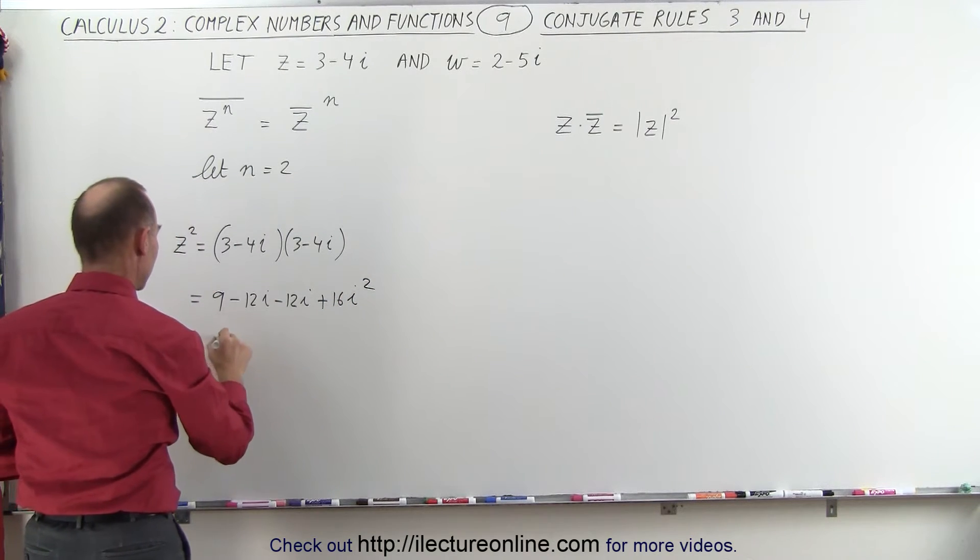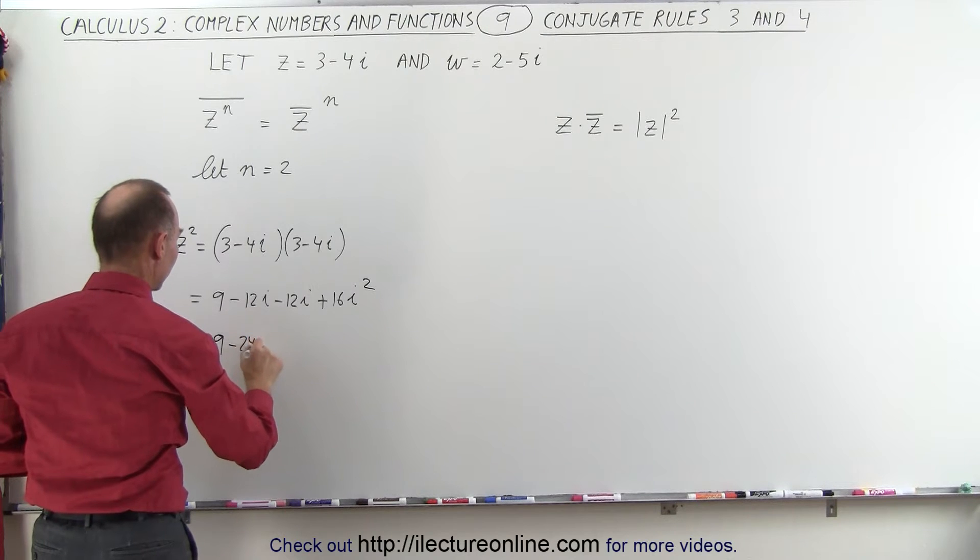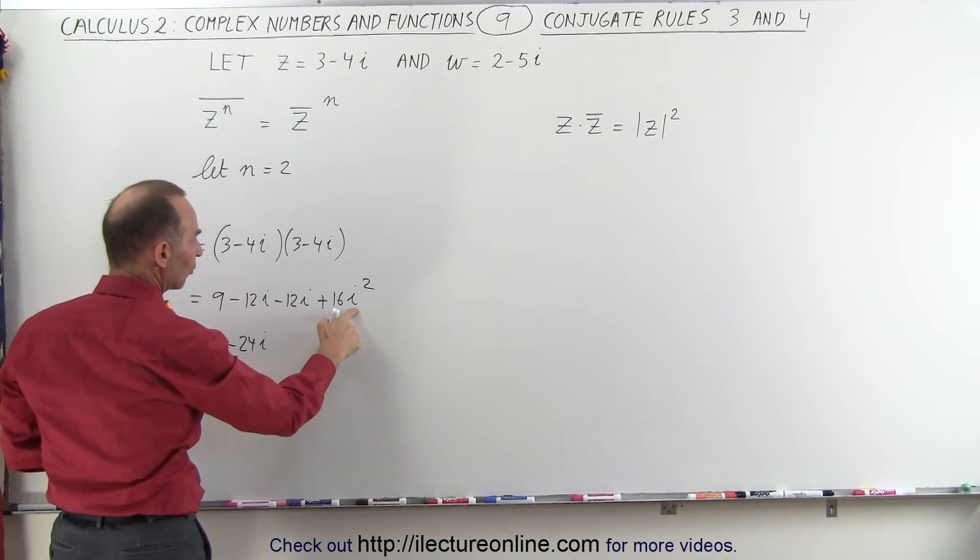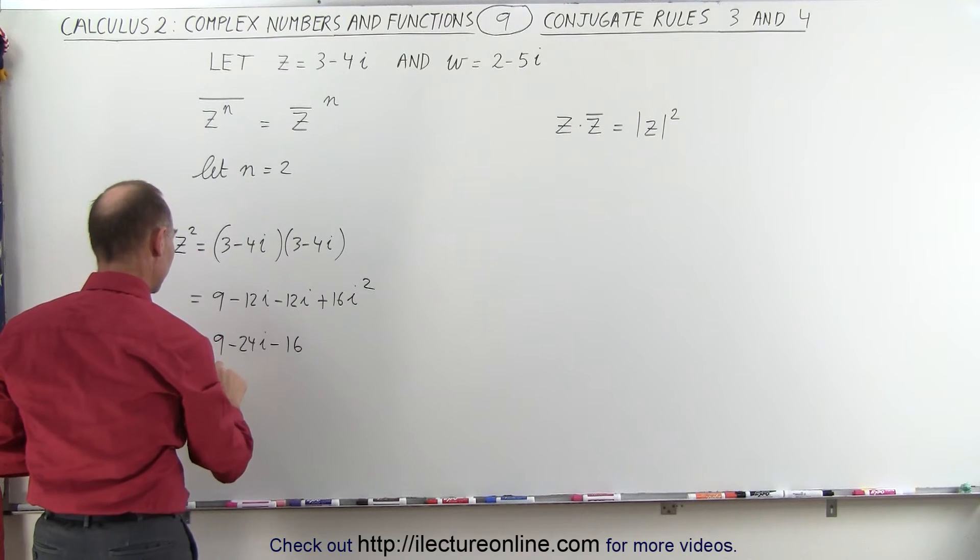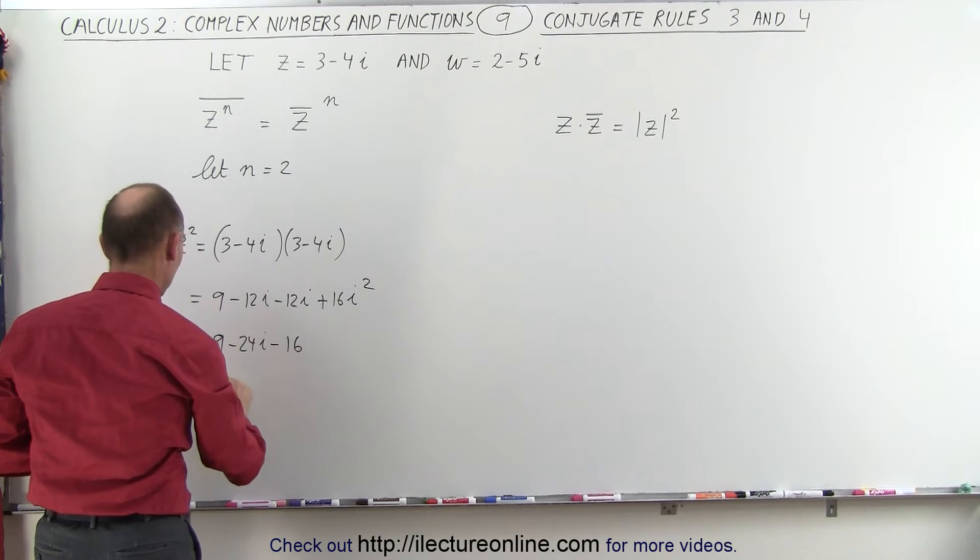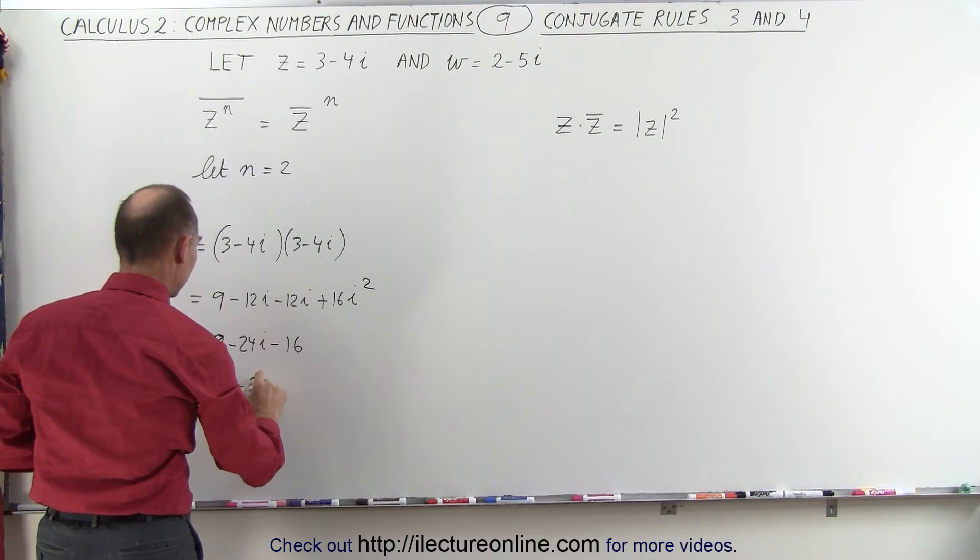So this can be simplified to be 9 minus 24i. And since i squared is negative 1, this becomes negative 16. And this is therefore equal to 9 minus 16, which is minus 7, minus 24i.